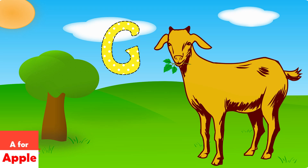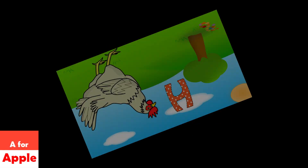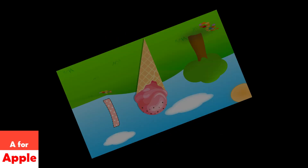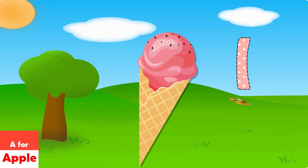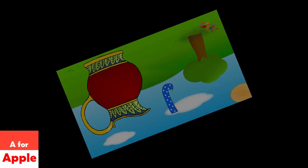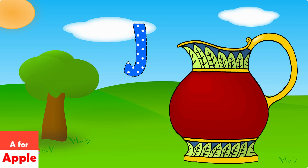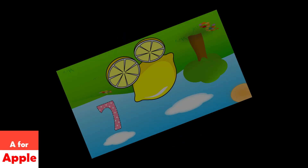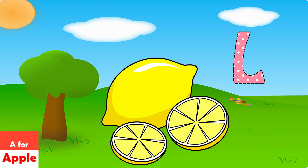G for goat, H for hen, I for igloo, J for jug, K for kite, L for lemon.